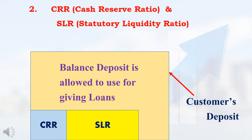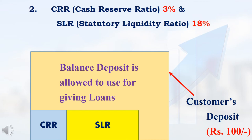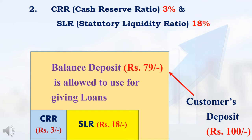In simple, CRR means how much percentage of the deposit amount should be deposited with RBI — that is CRR. SLR means how much percentage of the deposit amount should be kept separately by the bank itself — that is SLR. After deducting CRR and SLR, the balance amount only the bank can use for giving loans. At present, RBI has fixed CRR at 3% and SLR at 18%. For example, I have an account in SBI. If I deposit 100 rupees, SBI should not use all 100 rupees for issuing loans. CRR 3% means 3 rupees — SBI will deposit that 3 rupees with RBI. SLR 18% means 18 rupees — SBI has to keep that 18 rupees separately. So the remaining 79 rupees only SBI can use for giving loans.